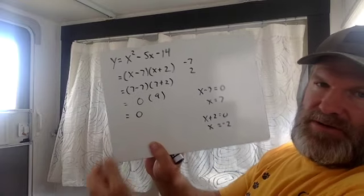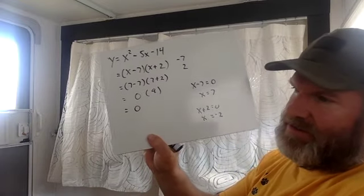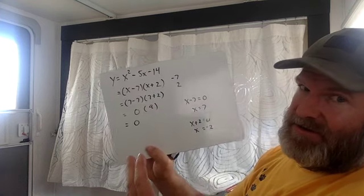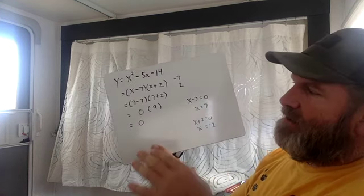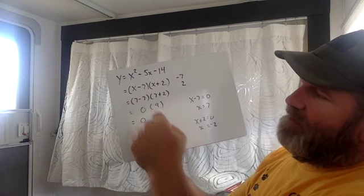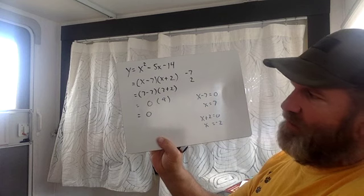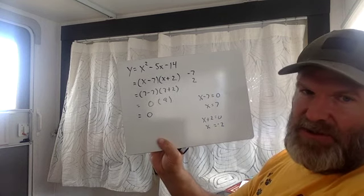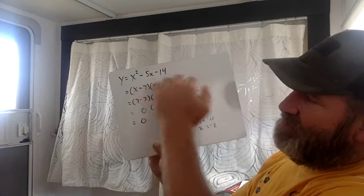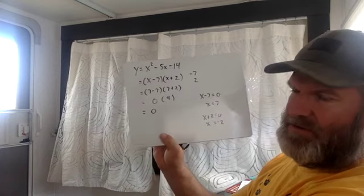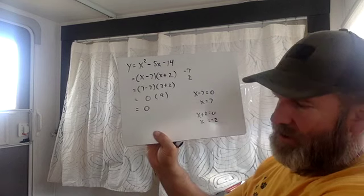So your x-intercepts in this problem would be positive 7 or negative 2. And that's the trickiest part to factoring and finding x-intercepts: if it says to factor and only to factor, then you can stop after the very first line. All you have to do is put the numbers in parentheses. (x - 7)(x + 2). That equation is factored. If that's all you have to do per the directions, then you're done.